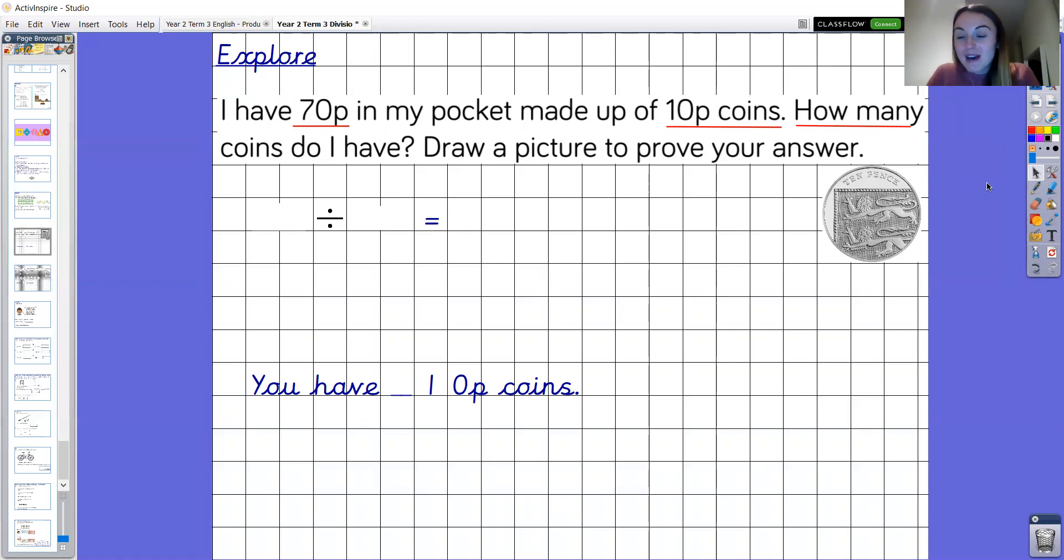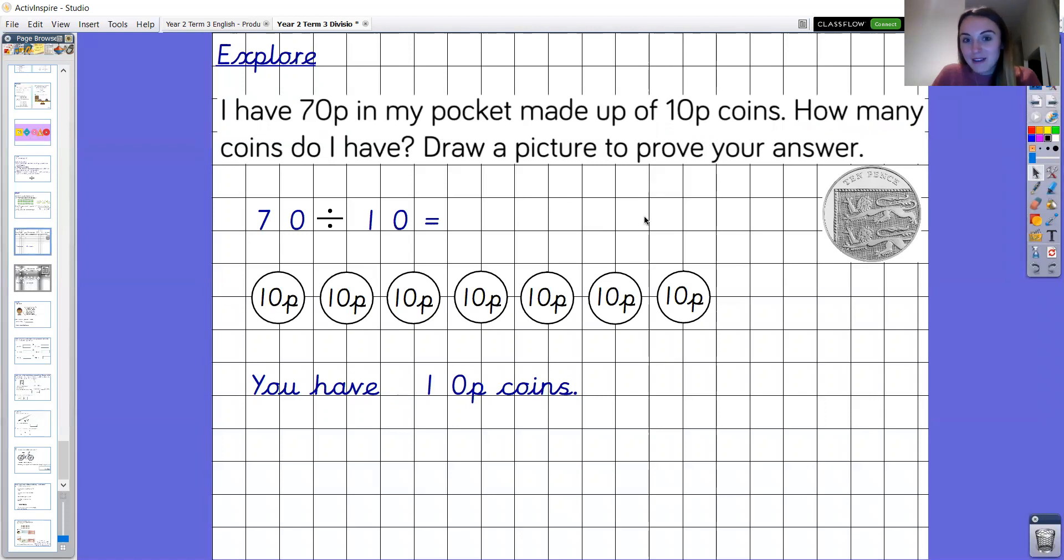Brilliant well done year two. You are really flying high today. Okay I'm going to share my thinking with you now. So as you can see here we are solving the division of 70 divided by 10 equals m and just like you have I've drawn my 10p coins to find out how many coins there are. Okay so shall we count to find out how many 10p coins there are.